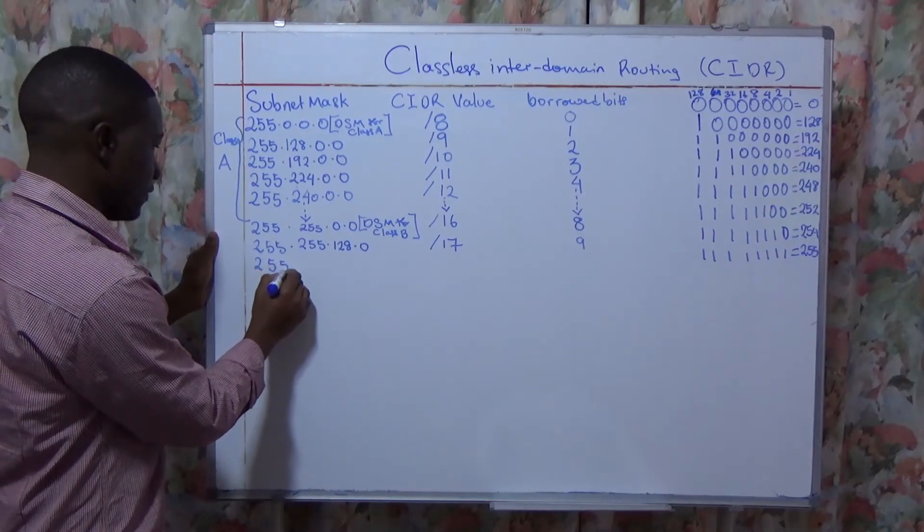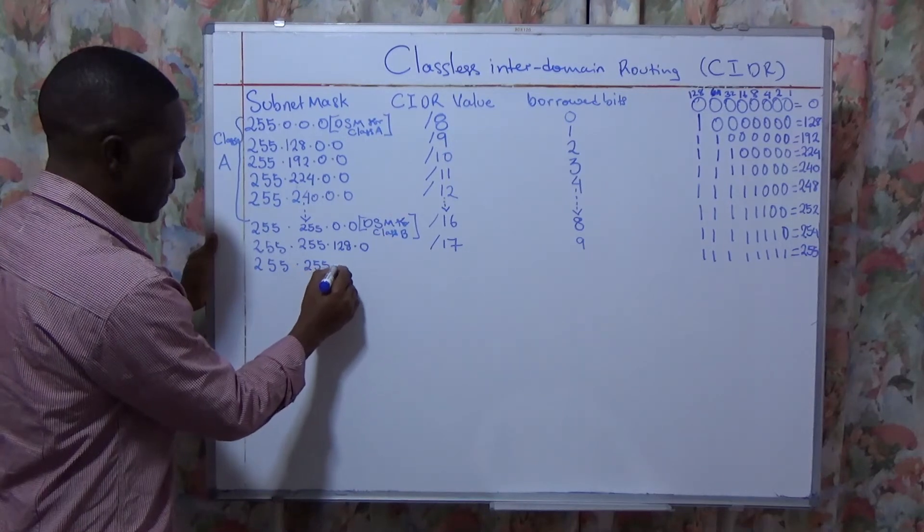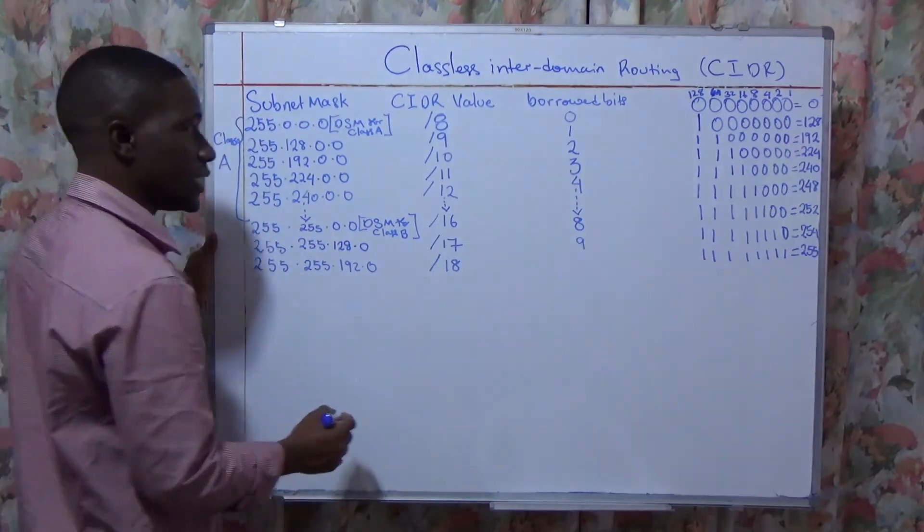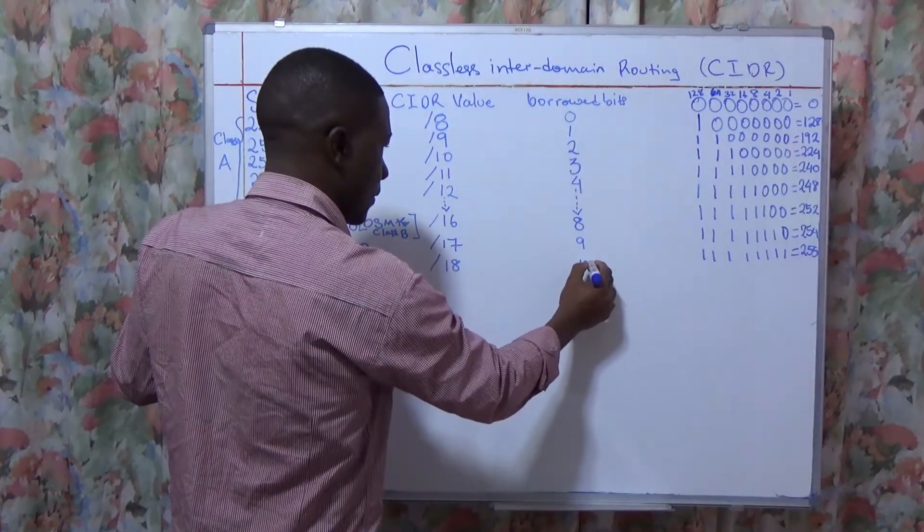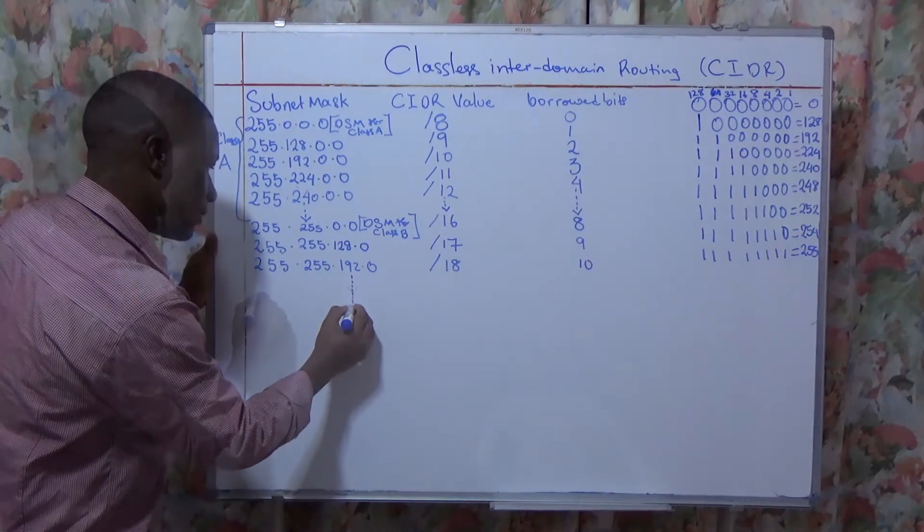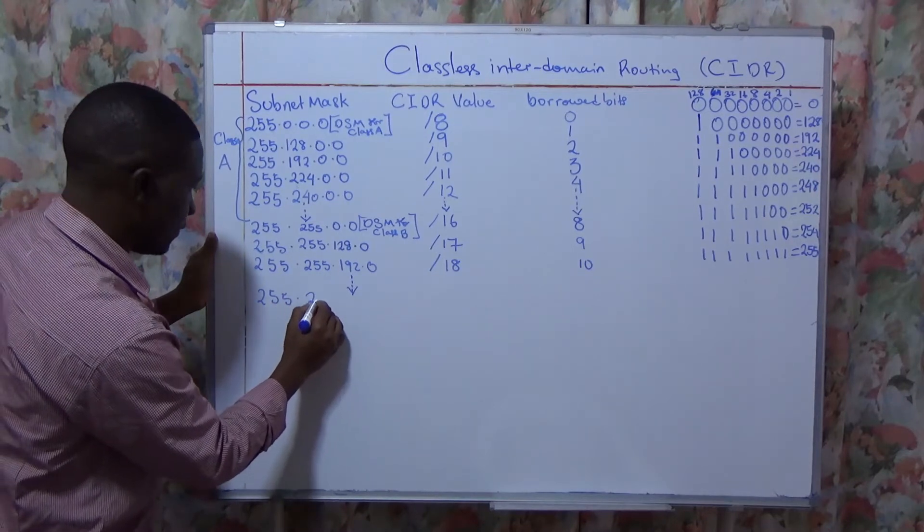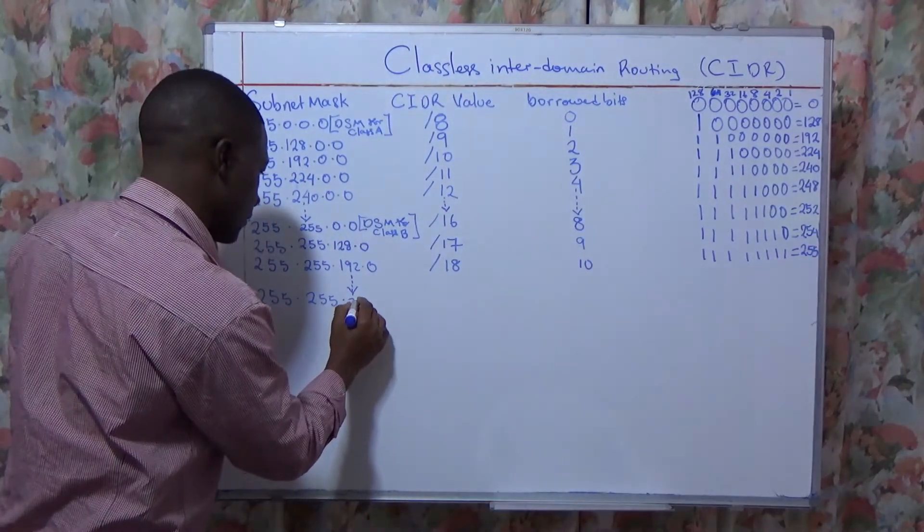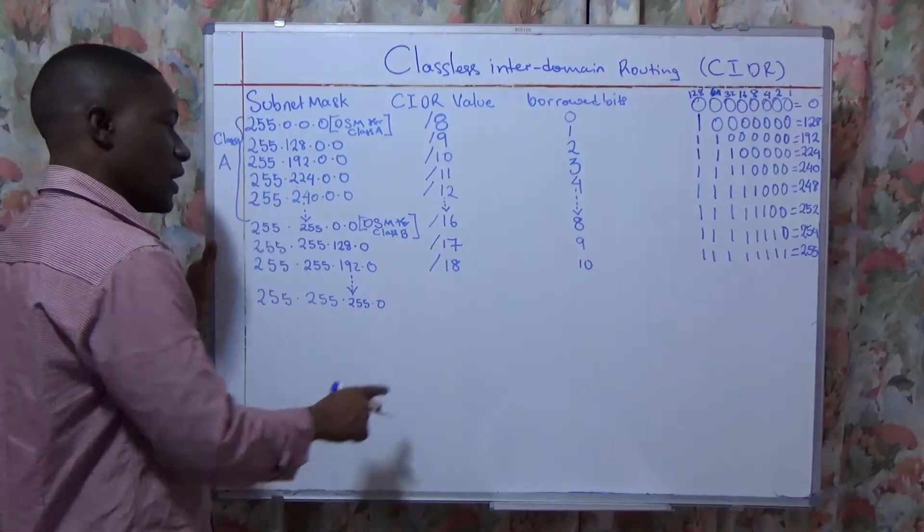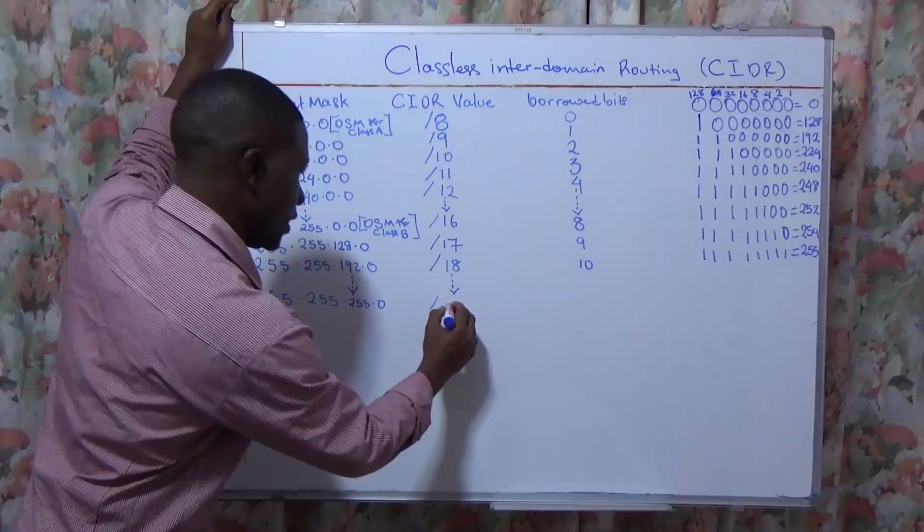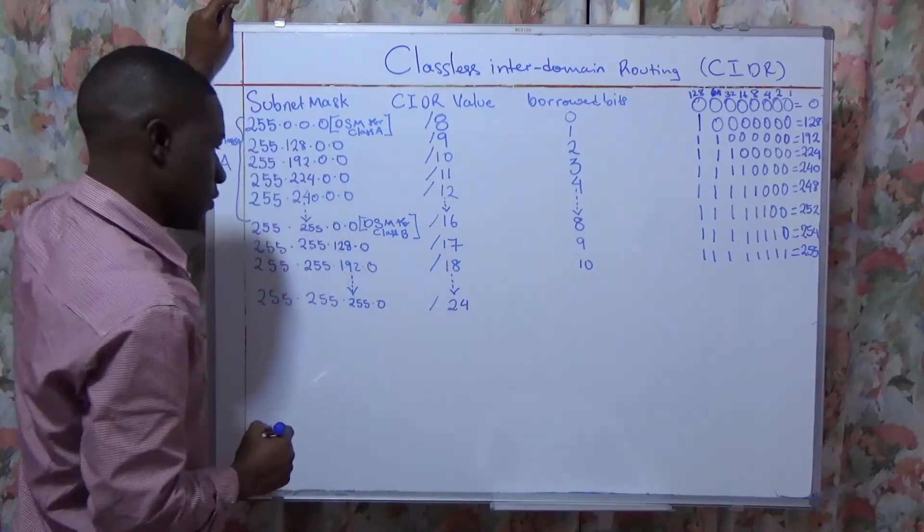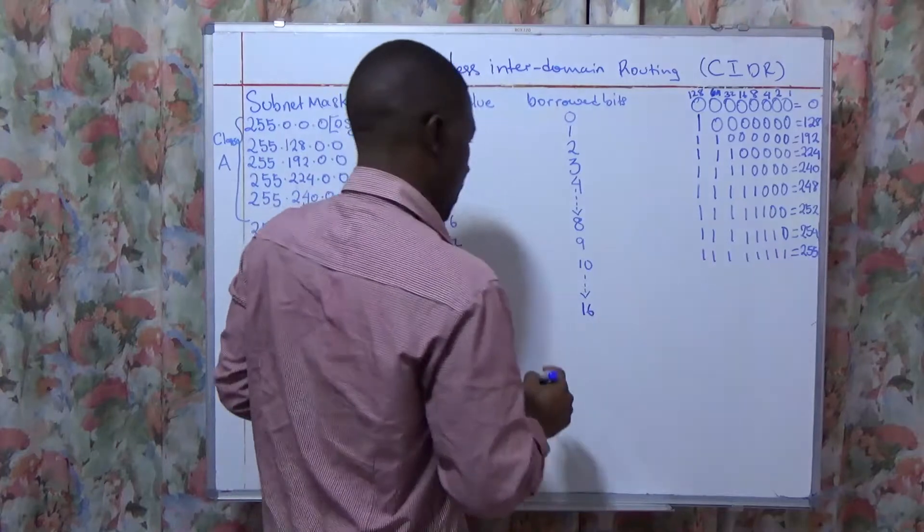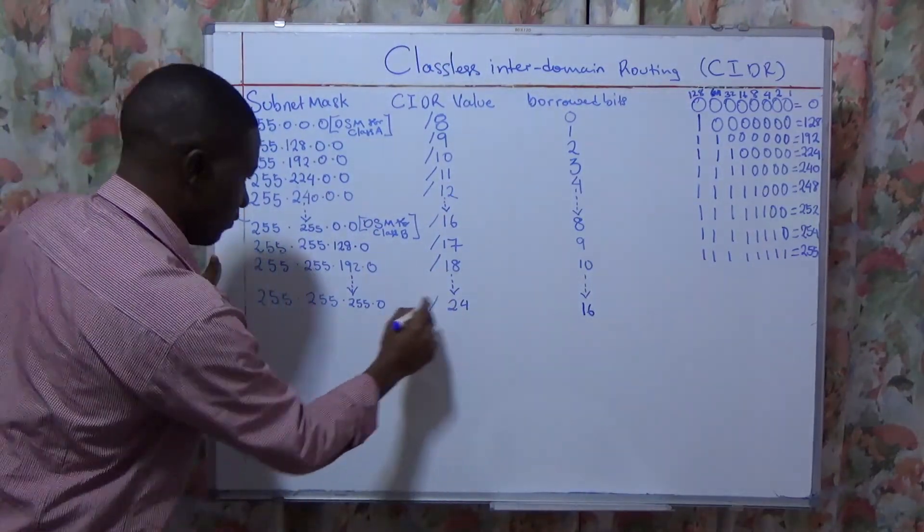Then 255.255.192.0, and the CIDR value is /18, and the borrowed bits are 10. And then we shall convert, convert, convert. 255.255.240.0, and that will mean that we are at /20, and the borrowed bits will be 16. So here we shall have moved into the other octet.